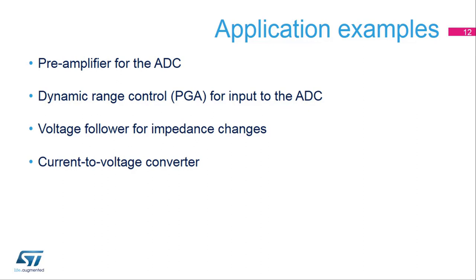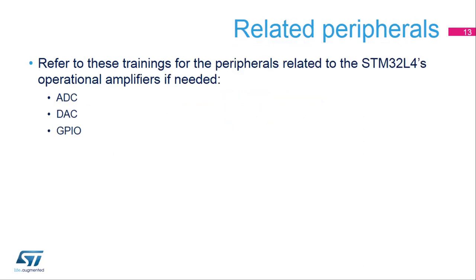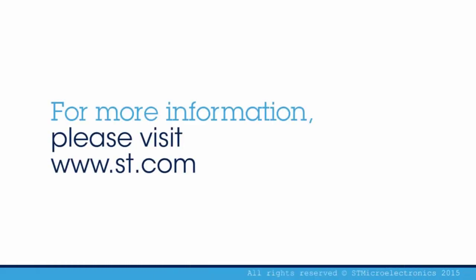Its low bias current allows it to properly perform as a current-to-voltage converter for the current sensing function. This is a list of peripherals related to the operational amplifiers. Please refer to these peripheral trainings for more information if needed.